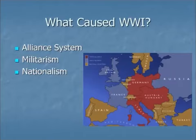In addition to this alliance system, which would cause a small conflict to grow into a global conflict, there was also increased militarism on the eve of World War I. There was a naval arms race between Britain and Germany — two countries that used to be allies — trying to build bigger and bigger navies to take control of the seas. Armies were increasing in size as they moved towards universal male conscription; that is, all men had to serve in the military, and therefore the armies were massive.